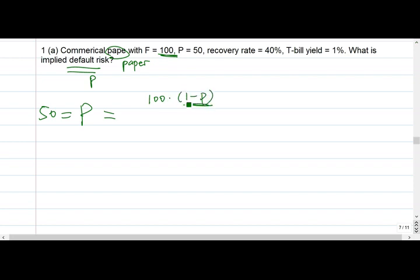So with probability 1 minus P, it's not going to be defaulted. And recovery rate is 40%, so $40 if it is defaulted.